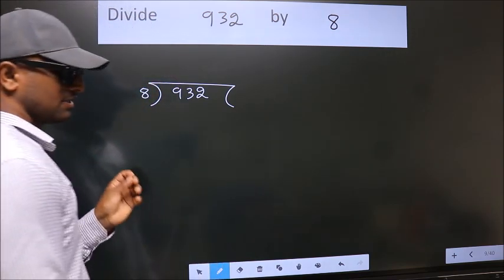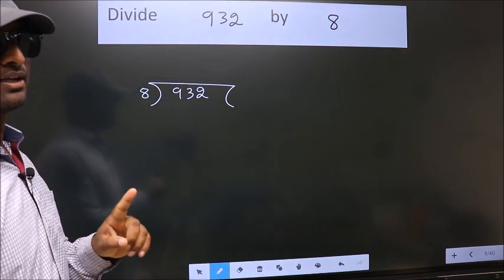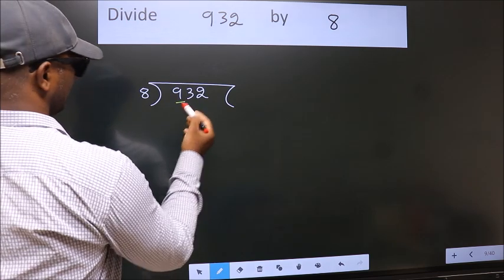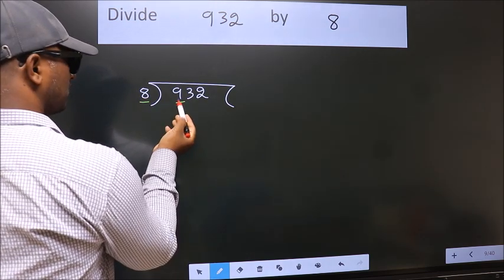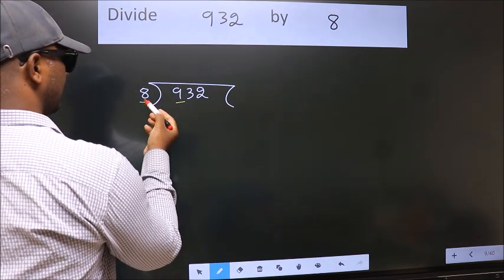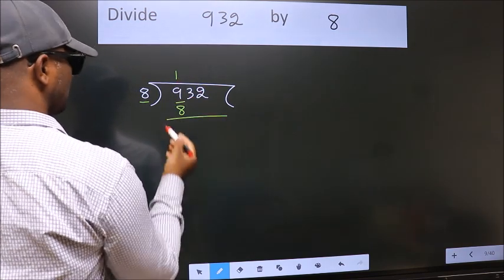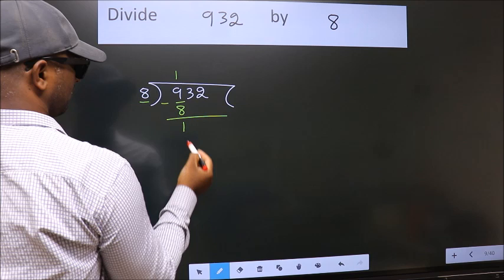This is your step 1. Next, here we have 9, here 8. A number close to 9 in 8 table is 8 once 8. Now we should subtract. We get 1.